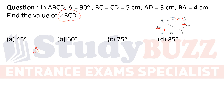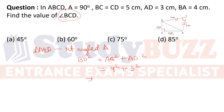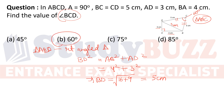We can see that triangle ABD is a right angle triangle. Applying Pythagoras theorem in triangle ABD: BD² = AB² + AD² = 4² + 3² = 16 + 9. So BD = √25 = 5 centimeters. Now in this triangle, since BC = CD = BD = 5 cm, every angle is 60 degrees. So the answer is option B: 60 degrees.